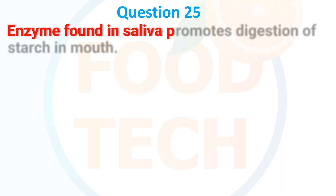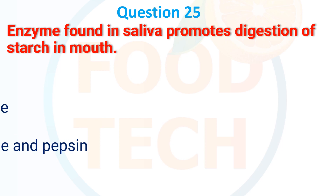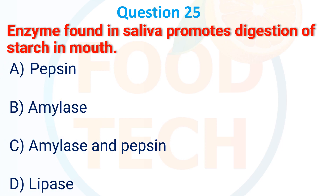The enzyme found in saliva that promotes digestion of starch in the mouth: A. Pepsin, B. Amylase, C. Amylase, D. Lipase. The answer is B. Amylase.